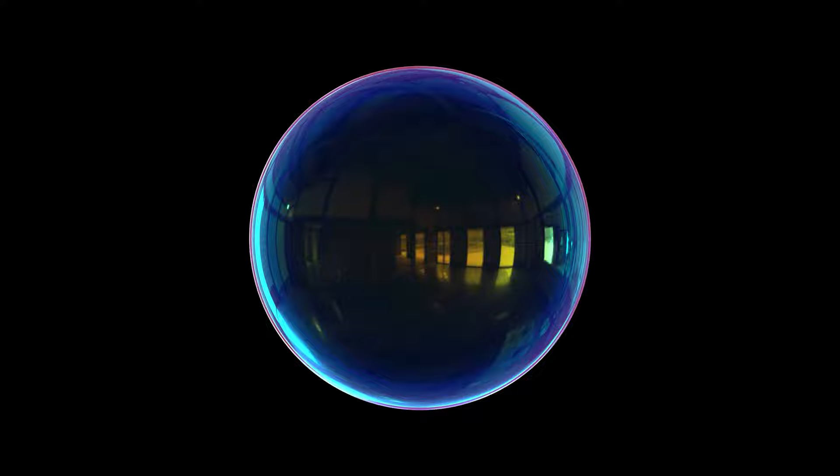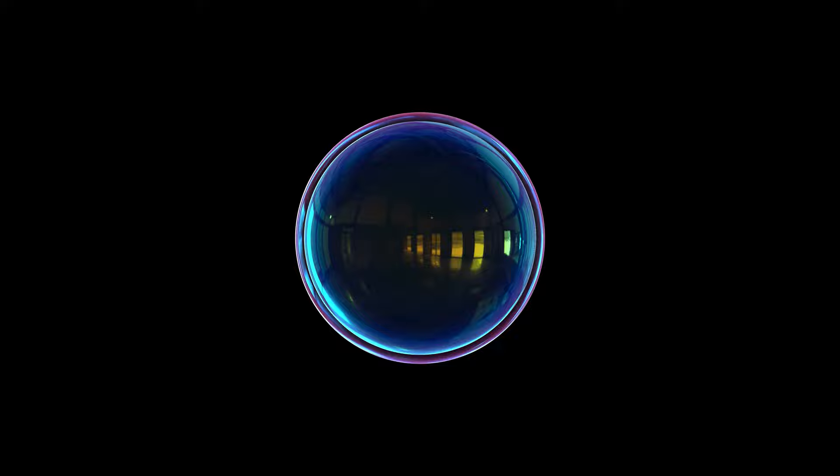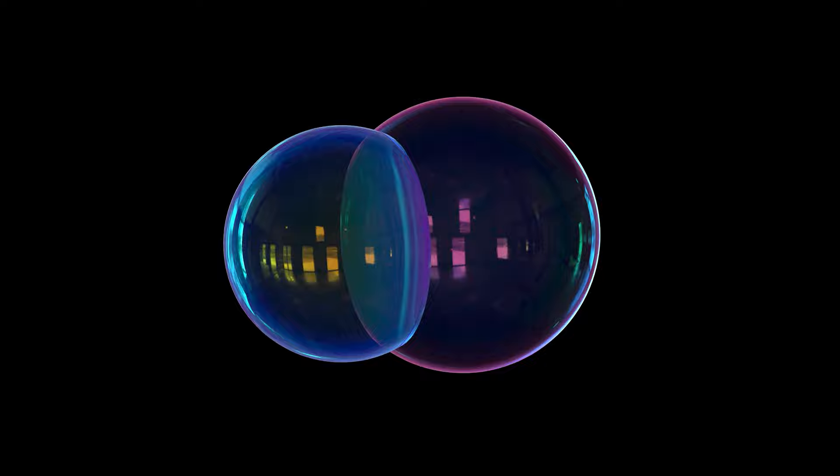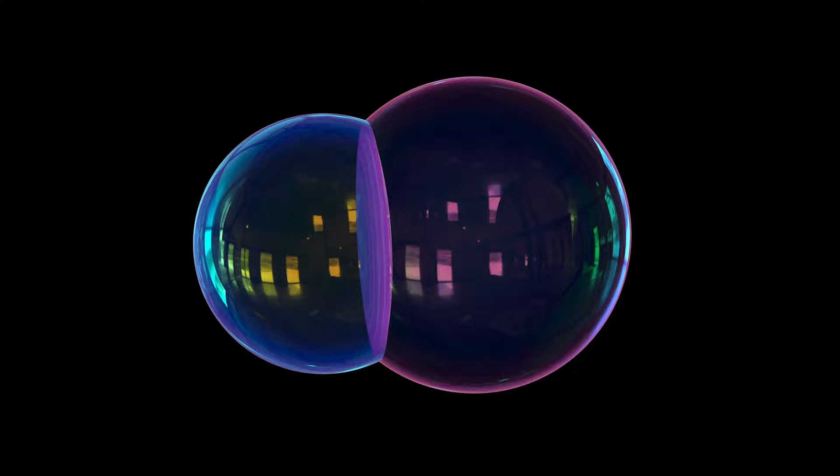A perfectly round sphere is the optimal least surface area way to enclose a given volume in 3D. But what happens if instead of a single volume, we have two volumes that we wish to both enclose and separate? What is the least surface area way to do so?